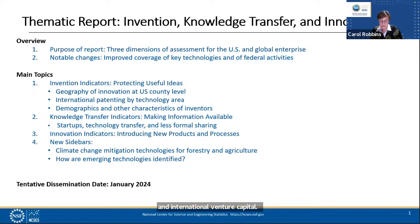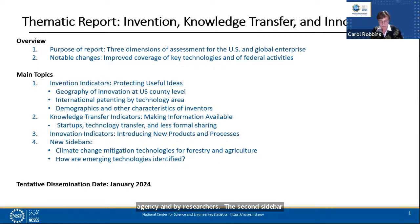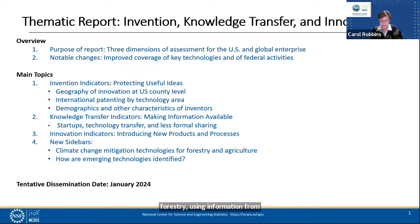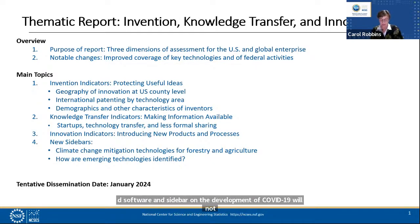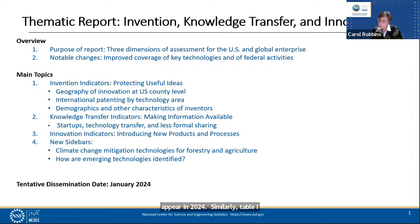Venture capital data are from the proprietary database PitchBook. Two sidebars are planned: one will explain various approaches currently being used to identify emerging technologies by federal agency and by researchers. The second sidebar will present trends in USPTO utility patents that address climate change mitigation technologies relevant to agriculture and forestry, using a classification from the European Patent Office and the United Nations Environmental Program. 35 supplemental tables will be eliminated due to the change in data sources for international patents. The 2022 sidebar on collaborations in open source software and the sidebar on COVID-19 development will not appear in 2024. Table INV24, showing contributions of federal agencies to open source software, will be replaced with information from the federal website code.gov. Tentative dissemination date is January 2024.